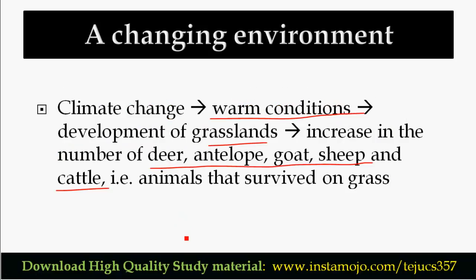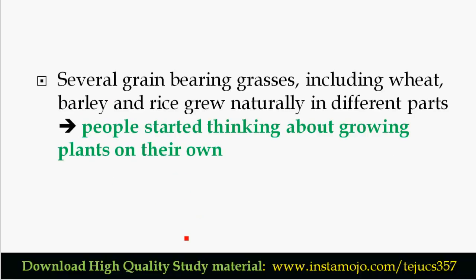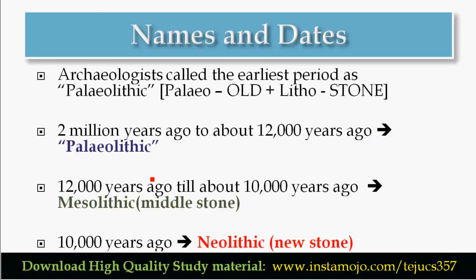Next is grasslands development and its impact. Grain-bearing grasses like wheat, barley, and rice grew as natural produce. The earliest people began to think about cultivating these plants. This plant-based food production was gradually implemented over time.